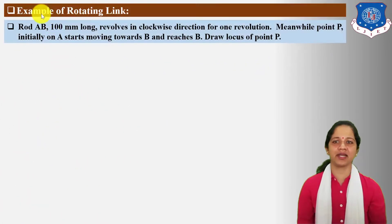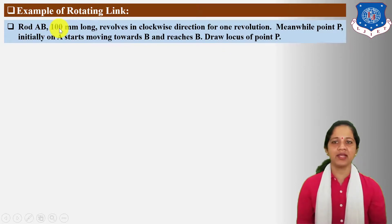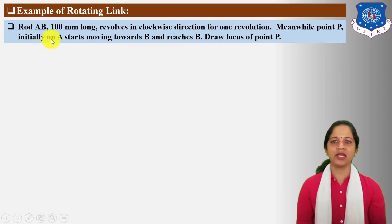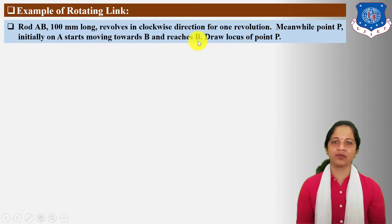Next, let us understand the example of rotating link. Rod AB 100 mm long revolves in the clockwise direction for one revolution. Meanwhile, point P initially on A starts moving towards B and reaches B. Draw the locus of point P.